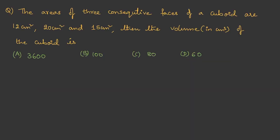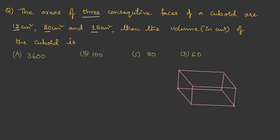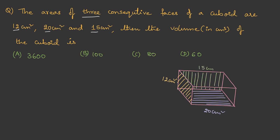Now let's get into a question. The areas of three consecutive faces of a cuboid are 12 cm², 20 cm², and 15 cm². Labeling the edges as L, B, and H, we can write: LB = 20 cm², BH = 12 cm², and HL = 15 cm². The question asks us to find the volume.